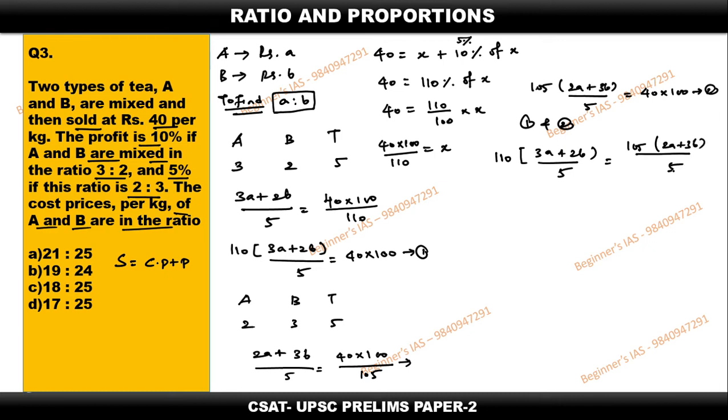Just I am cancelling both the denominators. In the numerator also you can cancel. So this is 22, 5 times. This is 21, 5 times. Then just multiply: 22 into 3 is 66a plus 2 into 22 is 44b, which is equal to 21 into 2a.